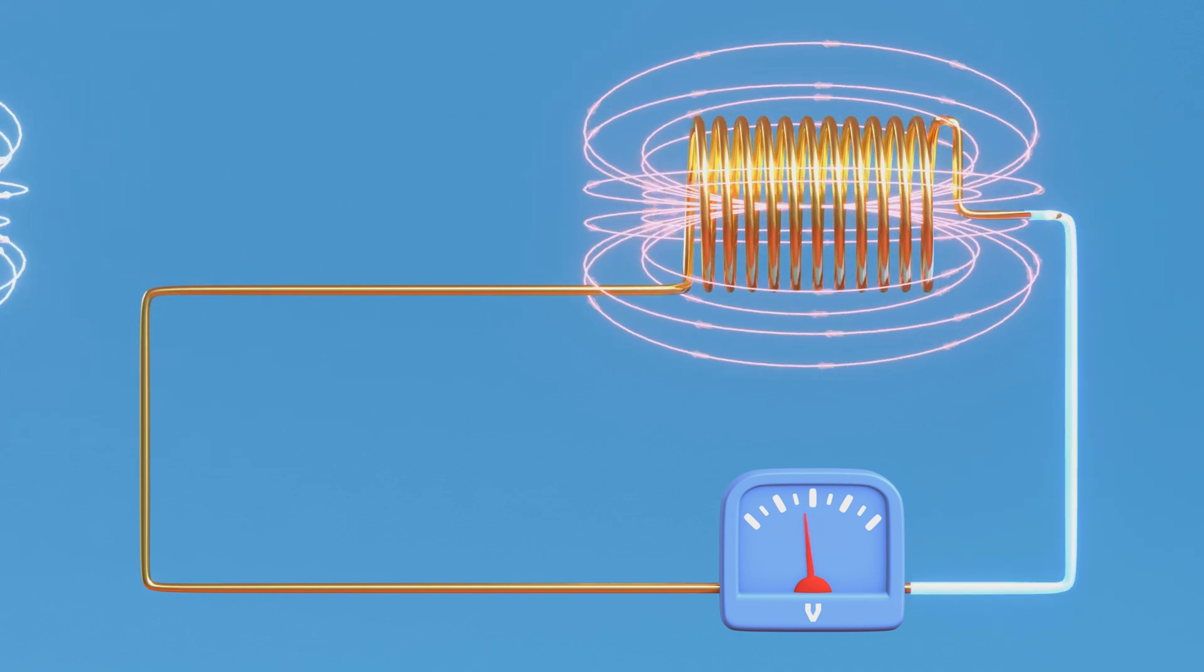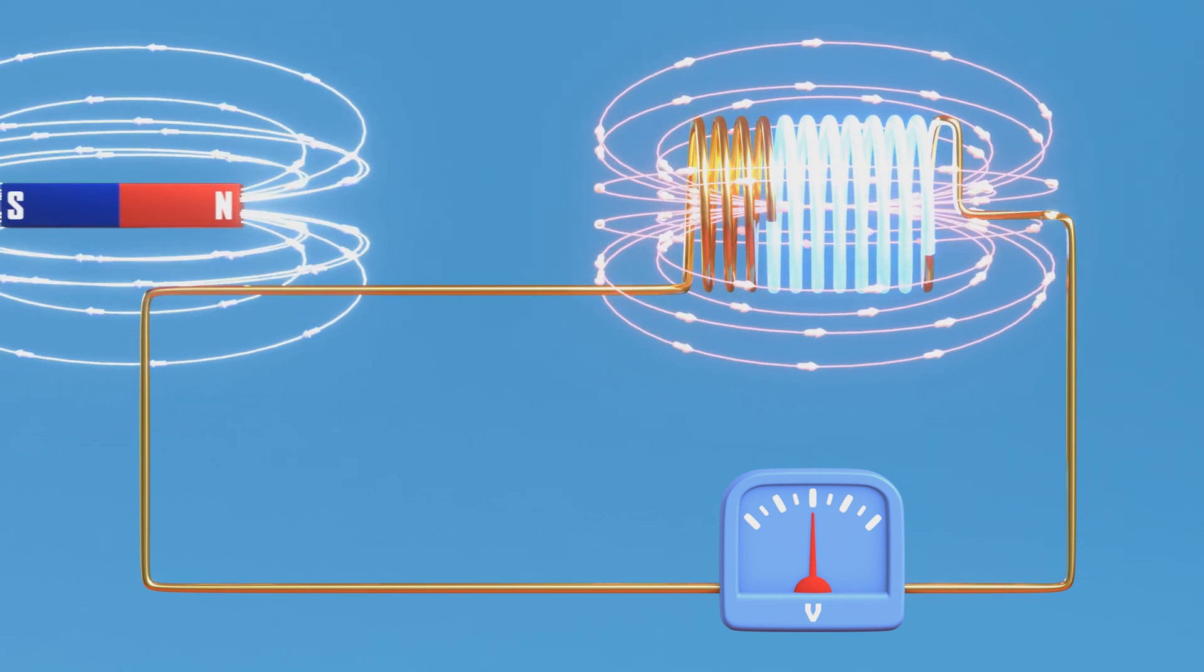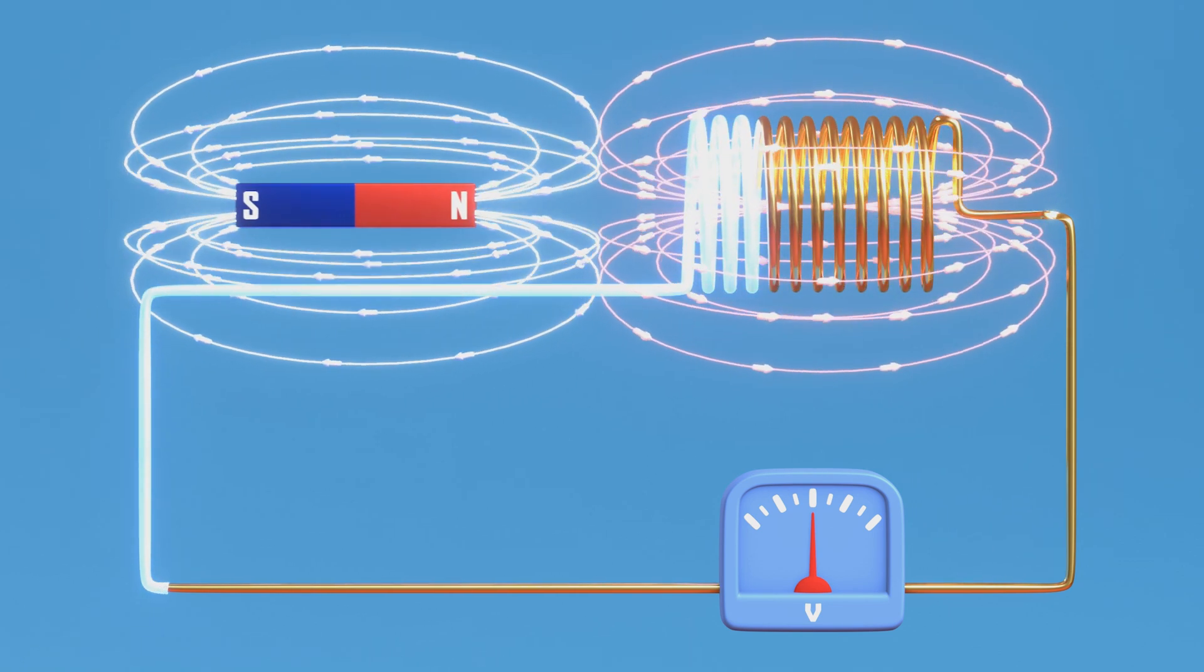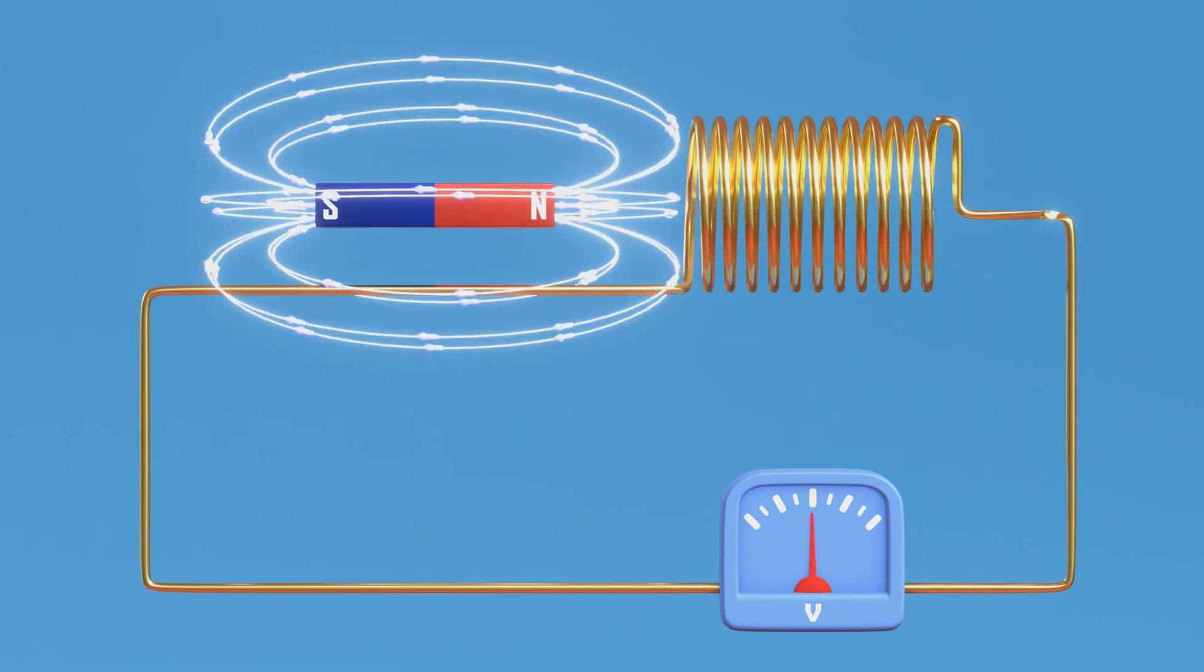Lenz's Law complements Faraday's Law by indicating that the induced current flows in a direction opposing the change in the magnetic field. For instance, when the magnet approaches the current-carrying coil, it induces a current that generates a magnetic field opposing the external magnetic field, oriented from left to right in this scenario.